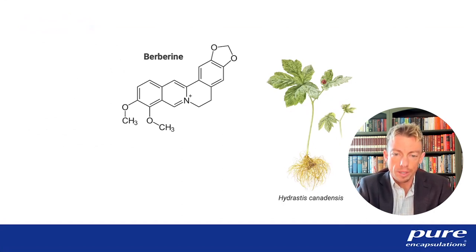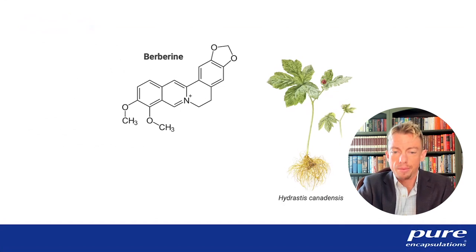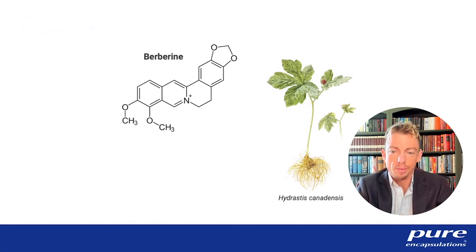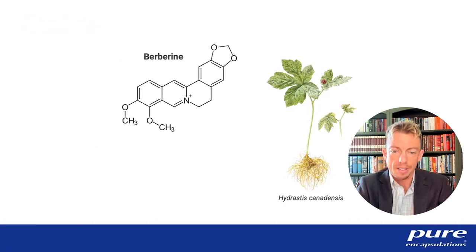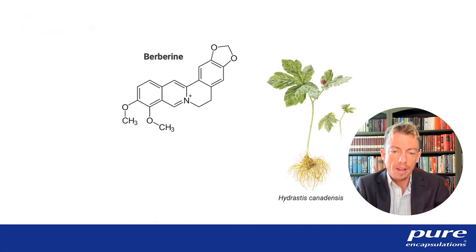Berberine is a quaternary alkaloid found predominantly in a genus of species called the Berberis species. This is actually a genus of over 300 different plants, and berberine is actually pretty rare in the plant kingdom. Its botanical occurrence is restricted mainly to that genus. One of the most familiar members would be goldenseal and some herbs in Chinese medicine like Coptis chinensis. Berberine doesn't really occur anywhere else, and we don't really ingest this compound through the diet.